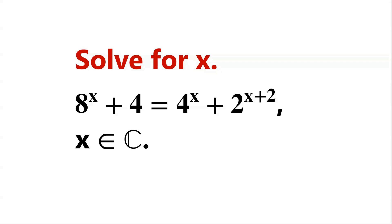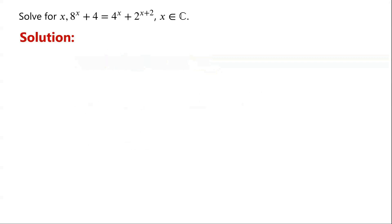Solve this exponential equation, where x is a complex number. The given equation can be written as 2 cubed all to the power of x, plus 4, equals 2 squared all to the power of x, plus 2 to the power of x plus 2.